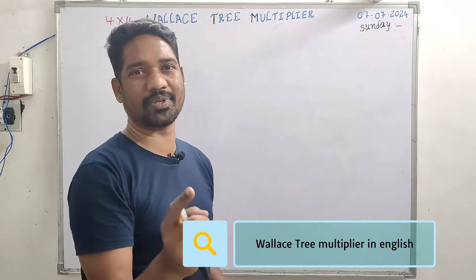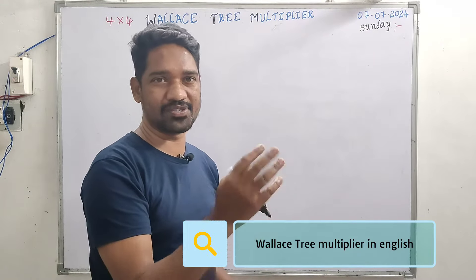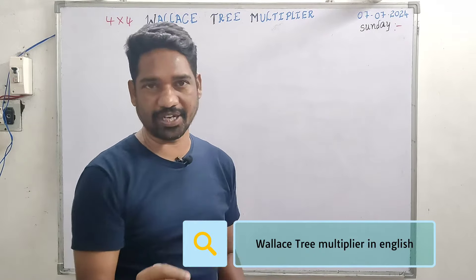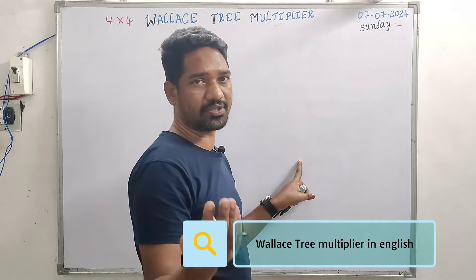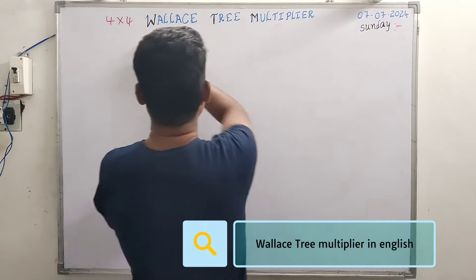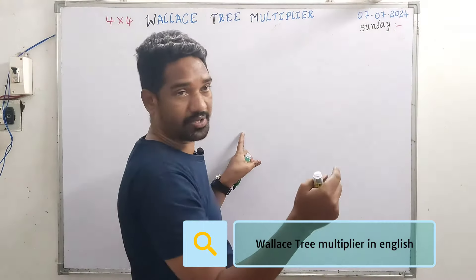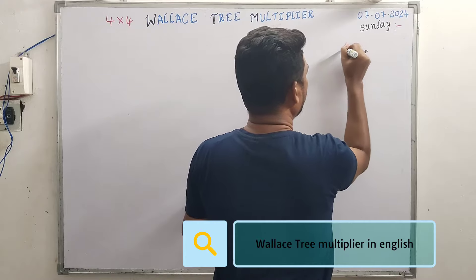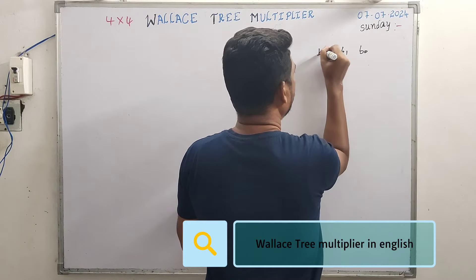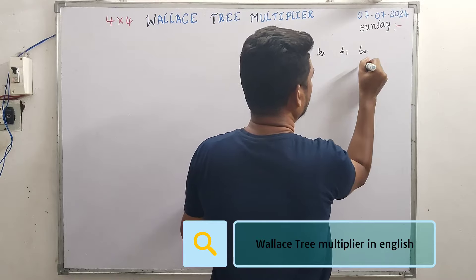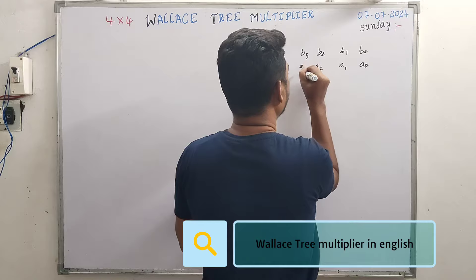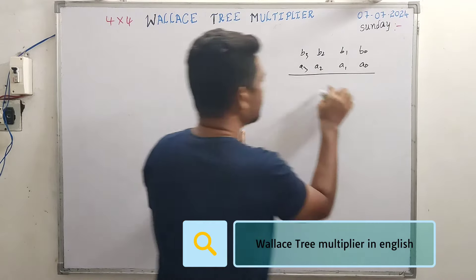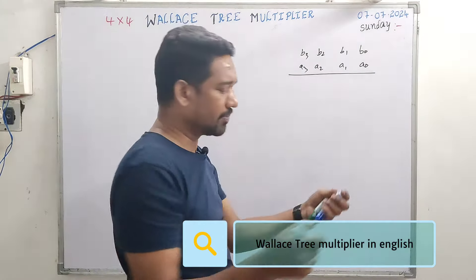This is all about a 4×4 Wallace Tree multiplier, covering where the half adder and full adder are used to obtain the partial product stage reduction and the final sum. Any multiplication has 3 stages: partial product generation, addition, and final sum. Talking about a 4×4 Wallace multiplier, the multiplicand is b0, b1, b2, b3 and the multiplier is a0, a1, a2, a3. Up to this stage is the partial product generation — it's a normal multiplication.